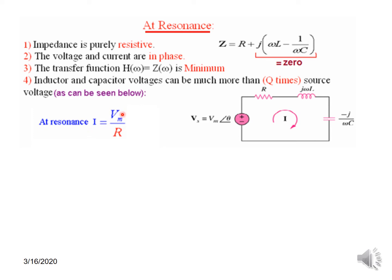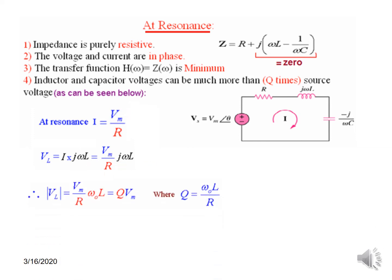At resonance, the current I = Vm/R, because the imaginary term is zero so Z = R. The voltage across the inductor is I·jωL, where I = Vm/R, giving jω₀L·(Vm/R). Taking the magnitude, this becomes (ω₀L/R)·Vm. Writing this as Q, the inductor voltage becomes Q·Vm. So if Q is 2, the voltage is 2 times the input; if Q is 10, it is 10 times the input.